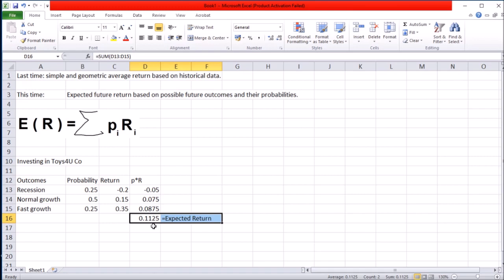Another thing we did last time is we looked at measures of dispersion, standard deviation and variance. That was a simple formula that you could use in Excel for historical data.